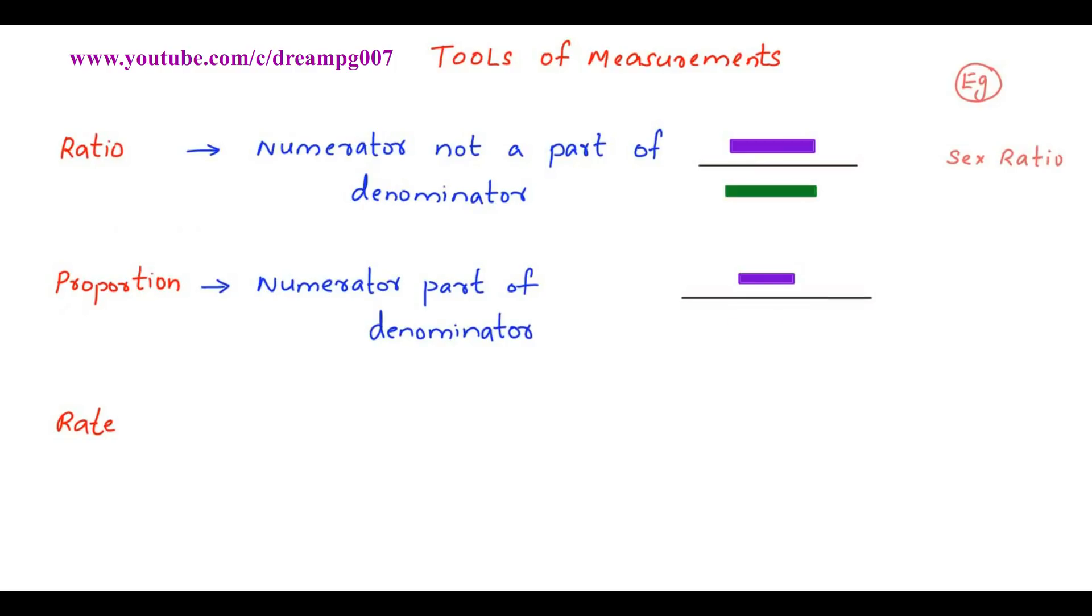And what is rate? In rate also, numerator is a part of the denominator, but in rate time period is specified, whereas in proportion there will be no time period.